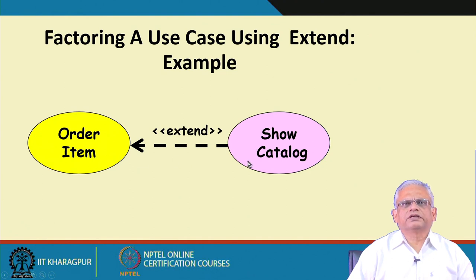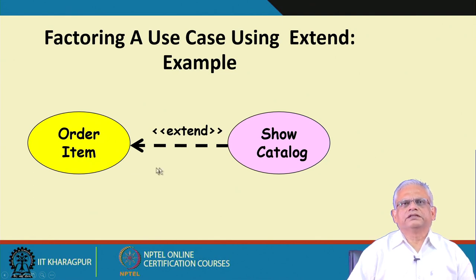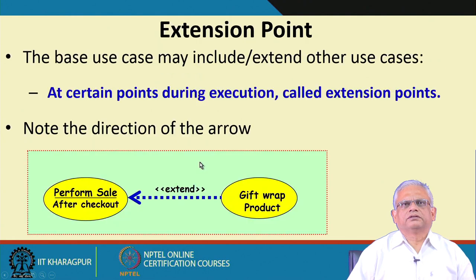By using the extend relationship, we split a use case into simpler use cases, but the factored use case is optionally included — sometimes it may get included in 'order item' for some users, and for other users it may not be needed at all.